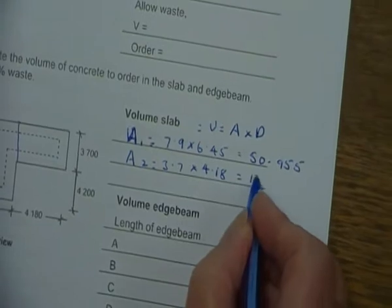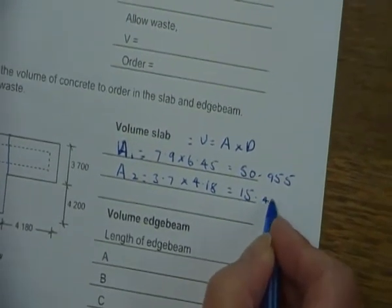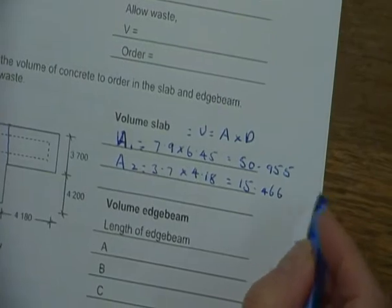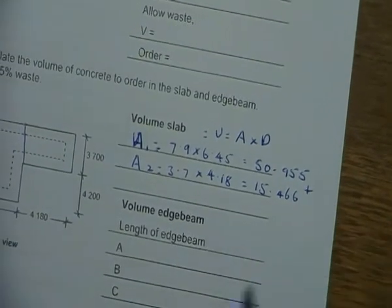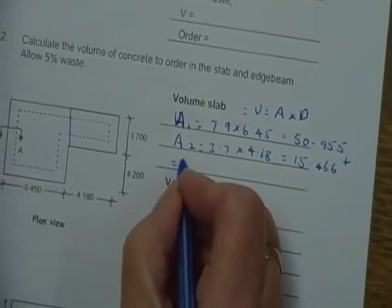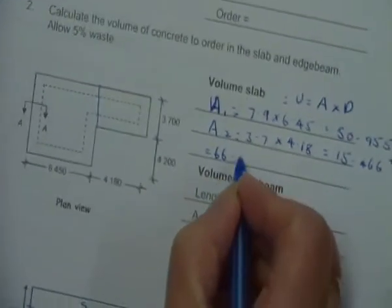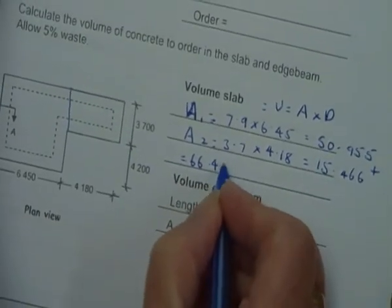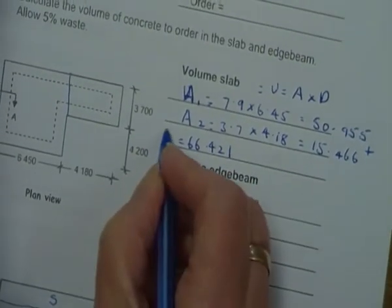For the first one you should get 50.955, and on area 2 you're going to get 15.466. Now we need to add those two together.